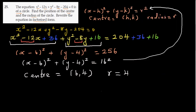So this is how you rewrite the equation from general form to standard form and find the center and radius. You can also draw it manually — that should not be difficult. The center is 6 comma 4 and the radius is 16.